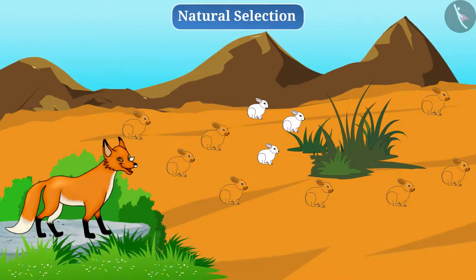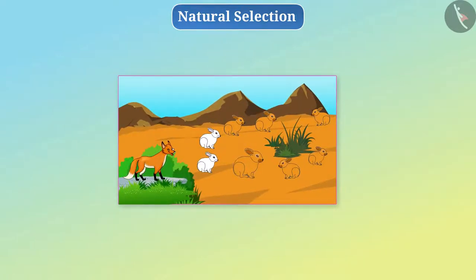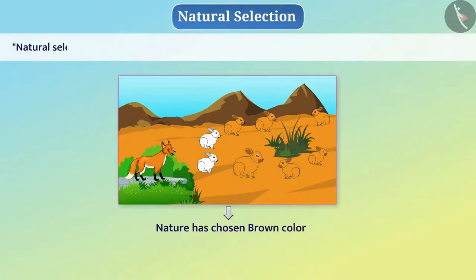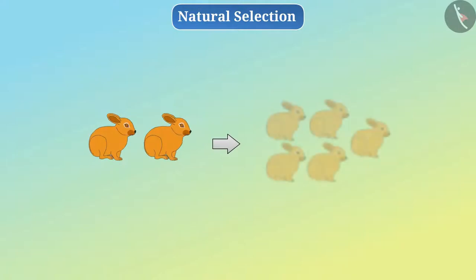Another important thing comes up here. This change has occurred with the arrival of the fox on the hill. Had the fox not arrived, the situation would be different. That is, in this situation, nature has chosen brown color. Similarly, nature selects those organisms for survival and reproduction which have the necessary adaptations to cope with the changing environment. That is what we call natural selection — a process in which organisms with favorable traits are more likely to survive. From this, we understand that natural selection is taking the organism towards evolution.